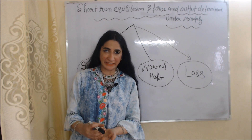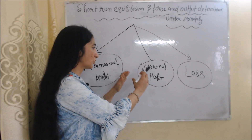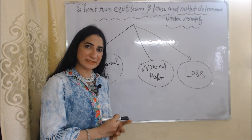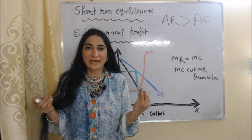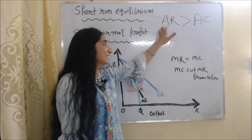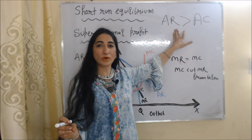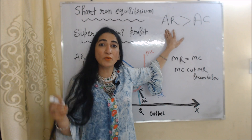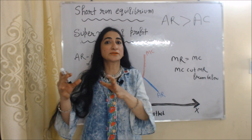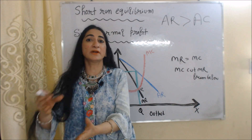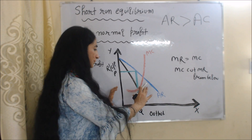At the short-run time period, a firm can basically have three equilibria: supernormal profit, normal profit, and loss. A firm gets supernormal profit when AR is more than AC — that is, when per unit revenue is more than per unit cost.